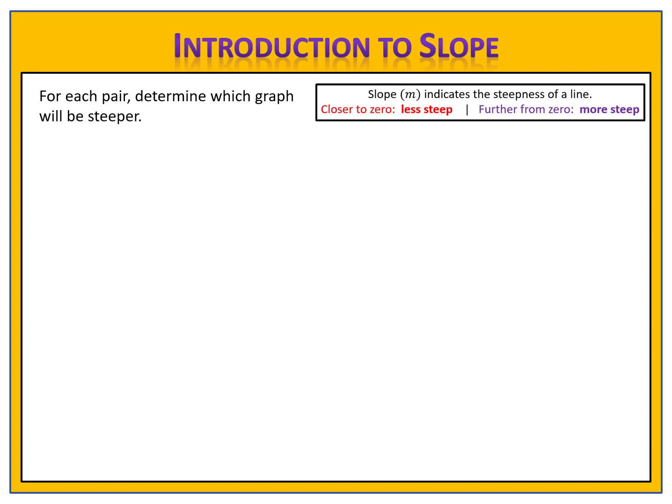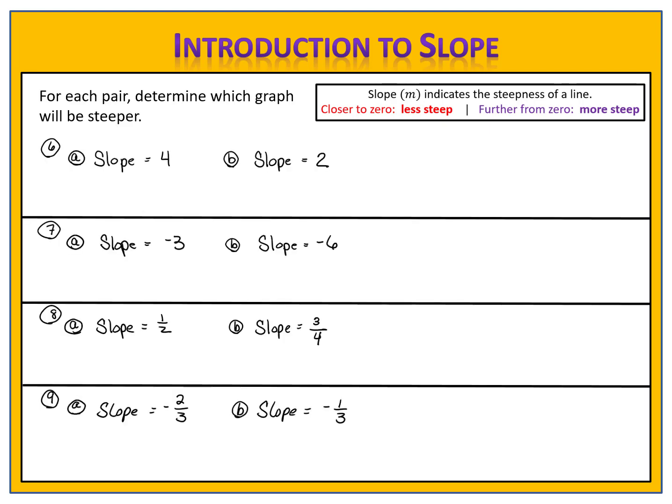Let's look at a couple of exercises to reinforce this idea. We have two pairs in each problem, choice A and choice B. Each choice represents the slope of a line. You have to determine whether the line with the slope in A or the line with the slope in B will be steeper. Please pause the video here and come back when you're ready to compare answers.